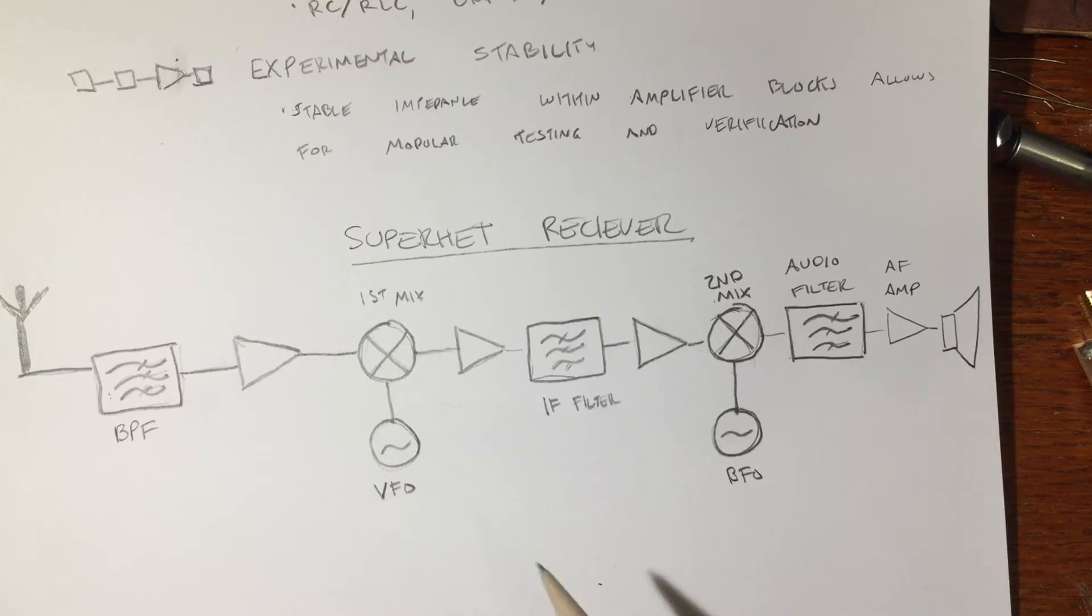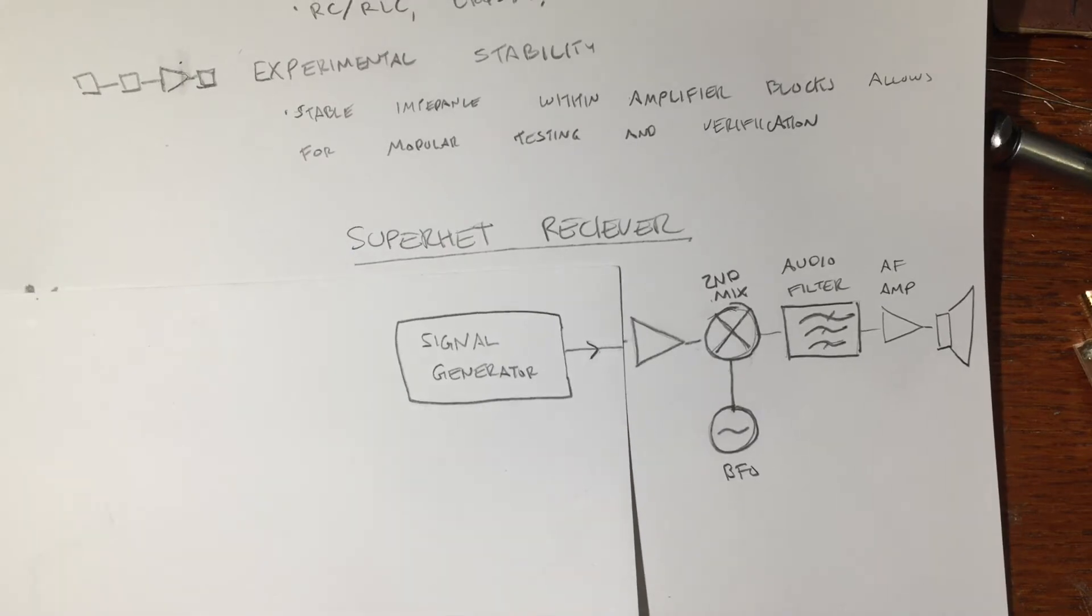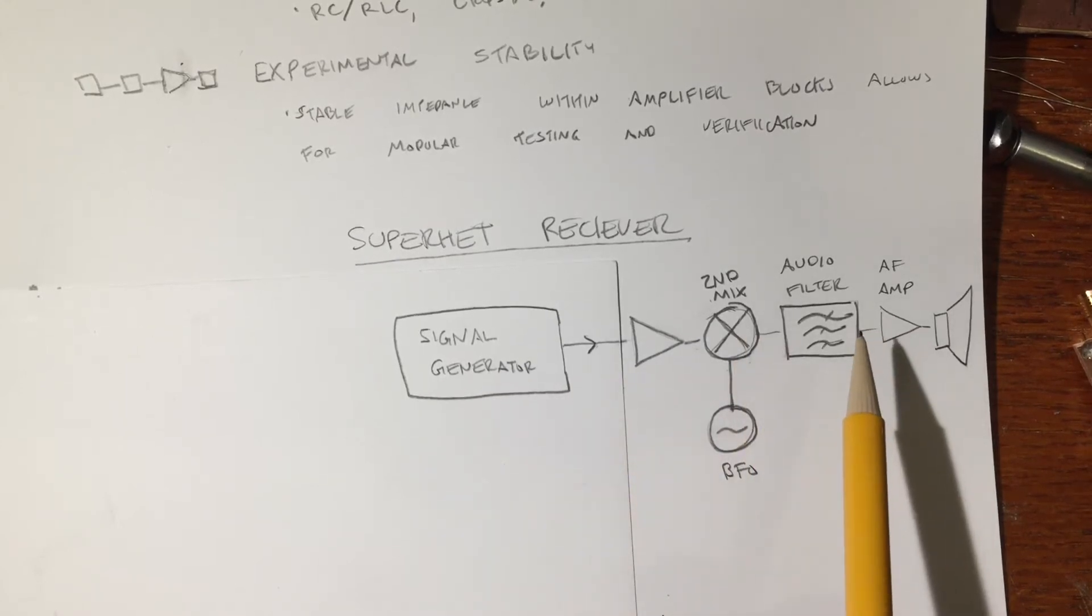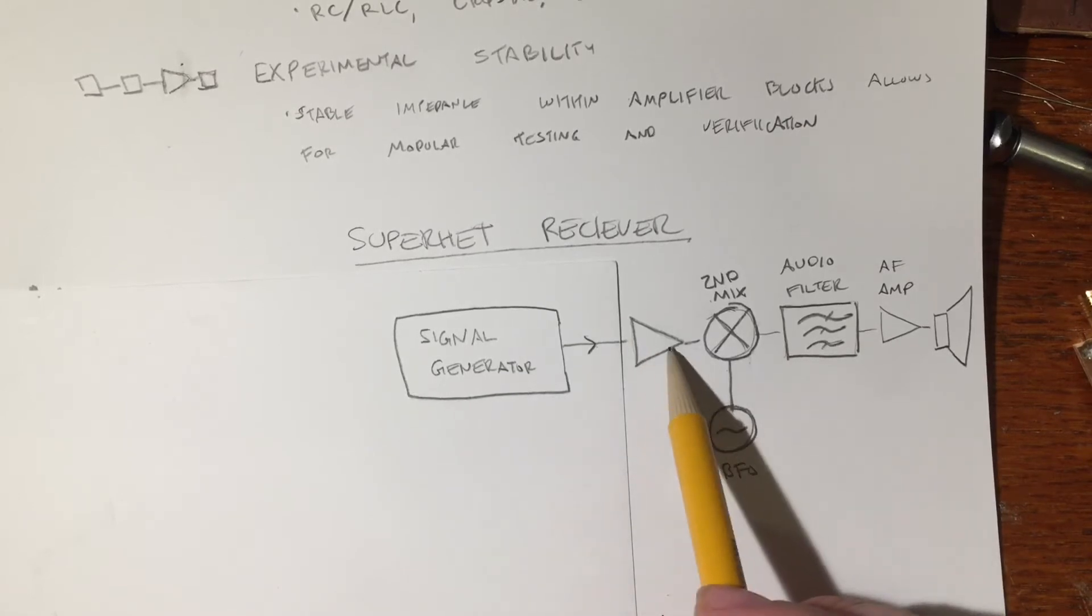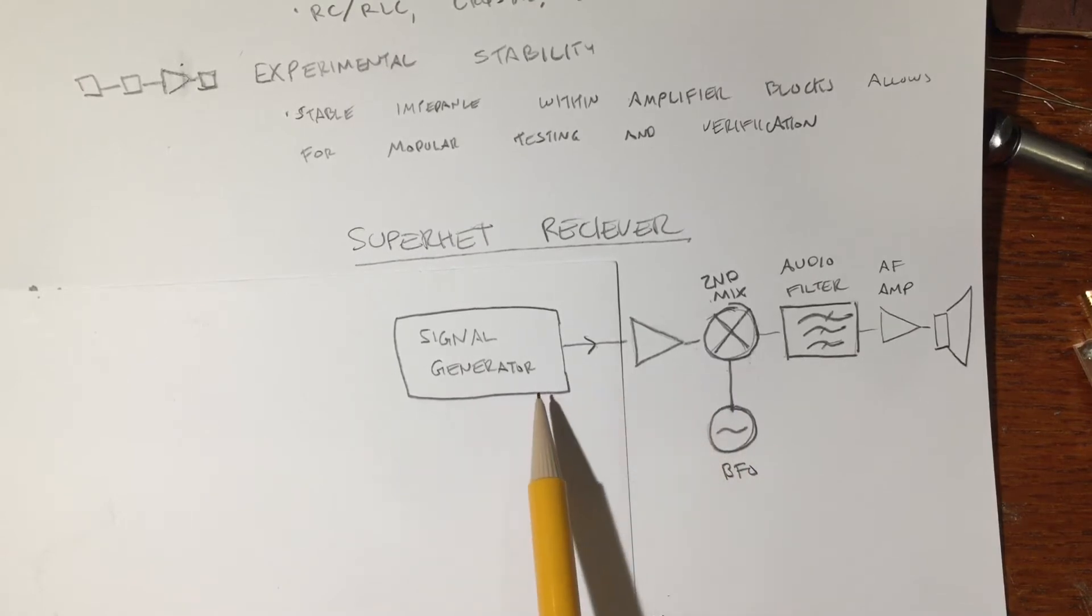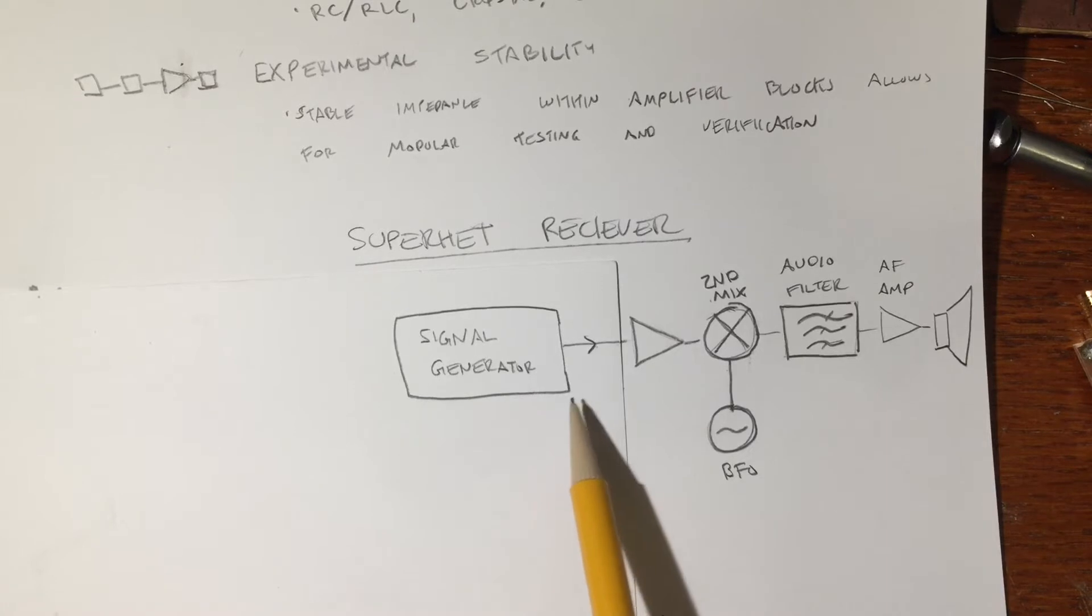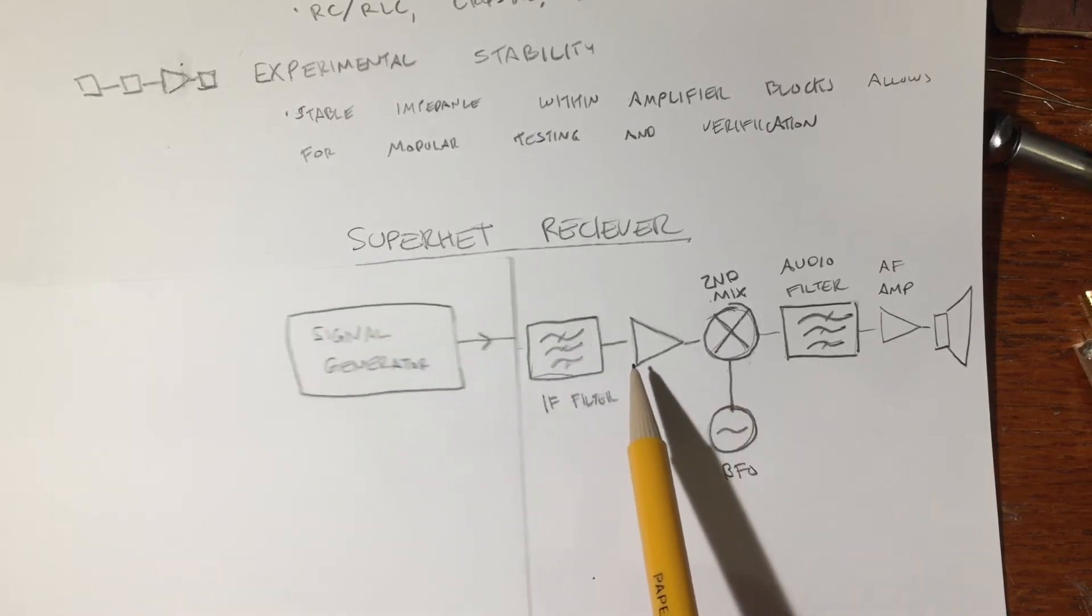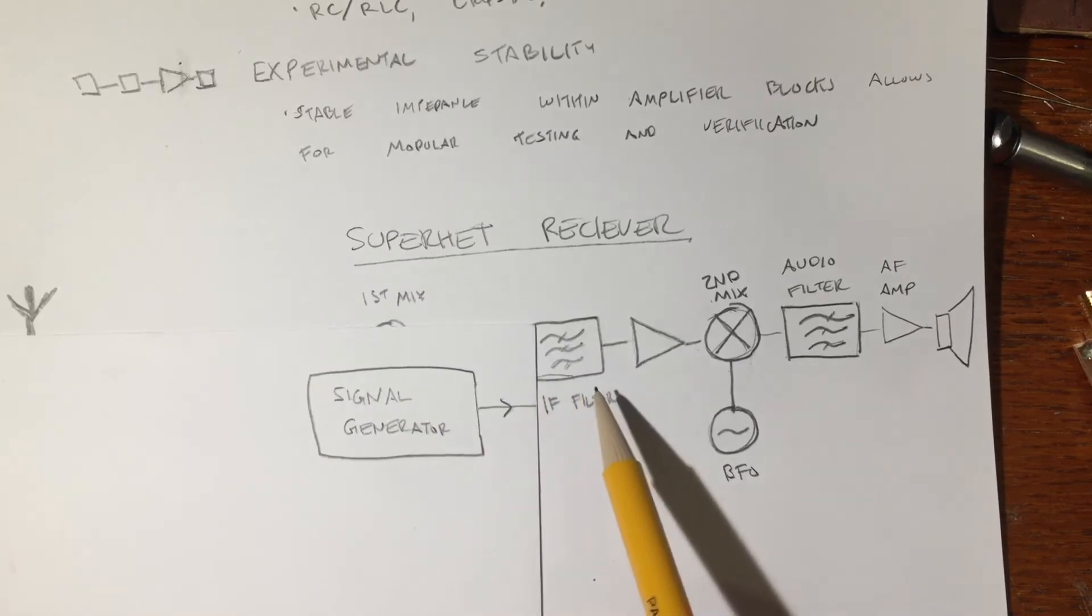But let's say as I'm building this that I would like to test just the second half of the receiver. I'd love to make sure that this mixer and the BFO and the audio frequency circuitry is all working. And I'd like to do that by just replacing all of the earlier parts of the circuitry with my signal generator. I just want to inject a little RF here, mix it with my BFO, see if any audio squirts out the far end. Well, if this is a generic amplifier, which is to say a termination sensitive amplifier, then the impedance that this mixer is going to see coming out of this amplifier is dependent on the impedance of my signal generator, which is probably not the behavior that I want.